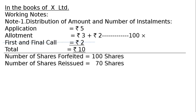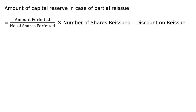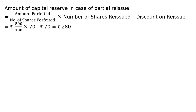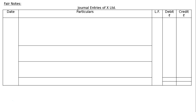Number of shares forfeited: 100. Number of shares re-issued: 70. Amount of capital reserve in case of partial re-issue equals amount forfeited divided by number of shares forfeited, multiplied by number of shares re-issued, minus discount on re-issue. That is Rs.500 — 100 shareholders paid application money of Rs.5, so 100 into 5 equals Rs.500 is the forfeited amount of 100 shares. For 70 shares, minus discount on re-issue: shares re-issued at Rs.7 per share, Rs.8 called up, so Rs.1 was discount on 70 shares, giving 70 into 1 equals Rs.70. Capital reserve is Rs.280.